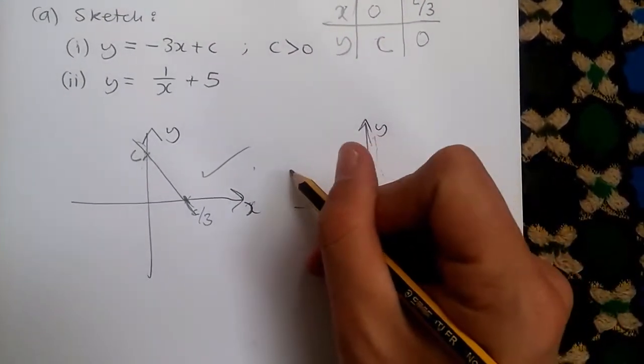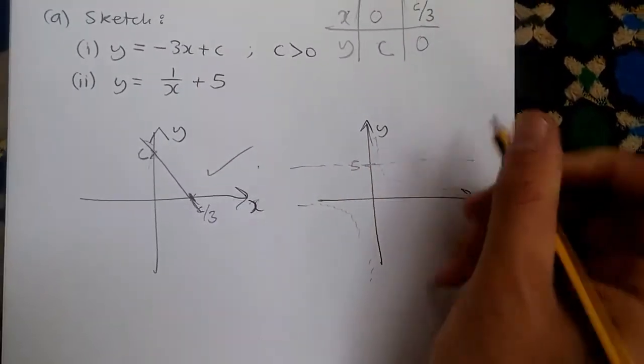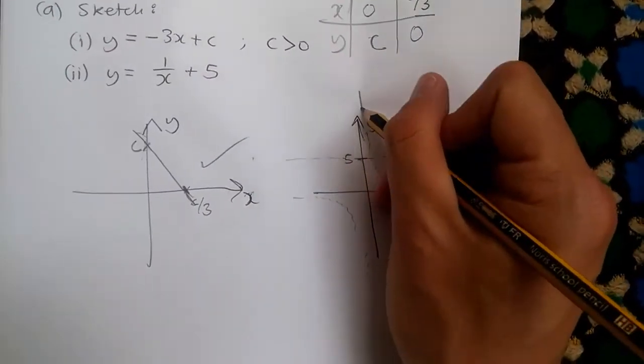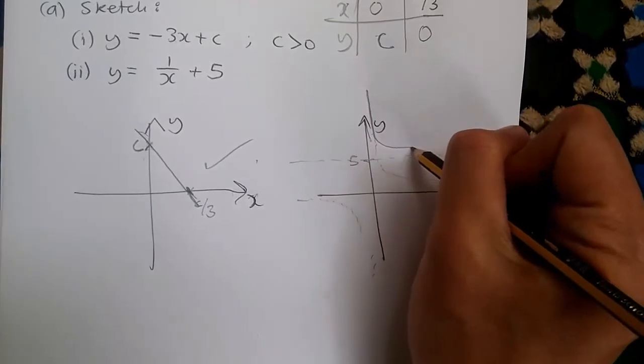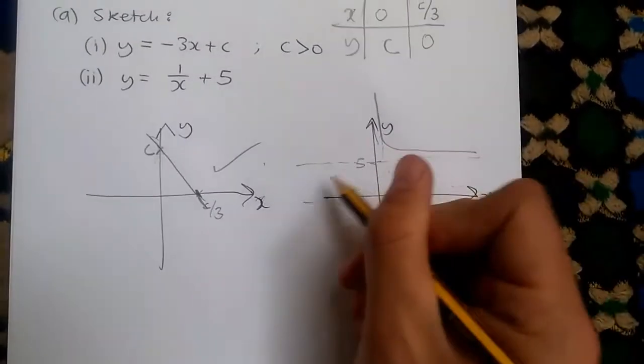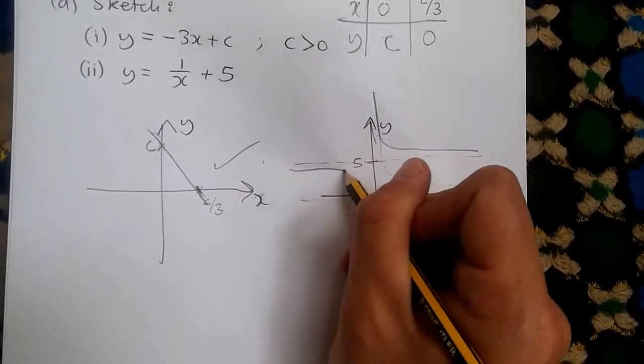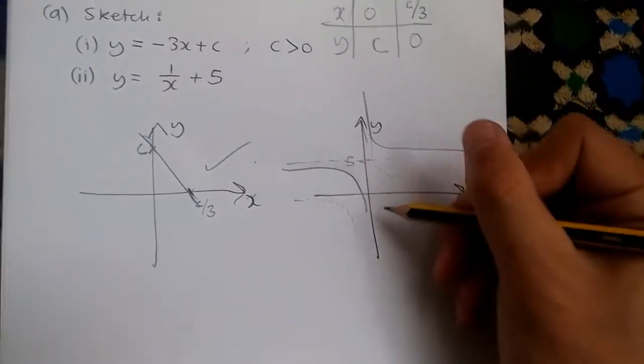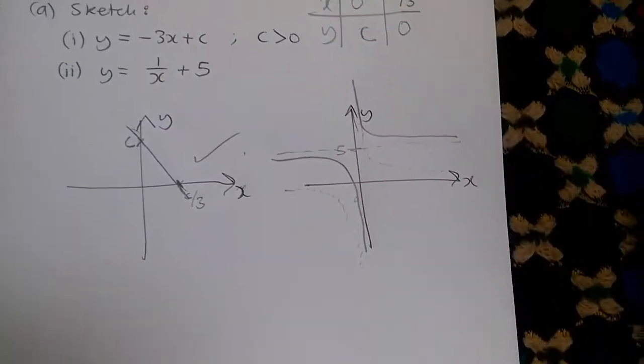So this tells you that now, with this new asymptote, we should sketch the graph properly. So we're going to have something like this, and again, continue, and that's it.